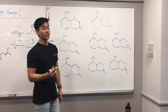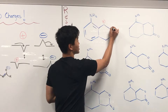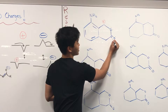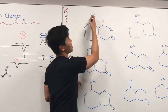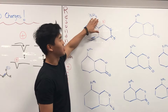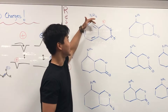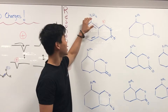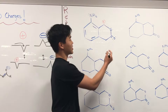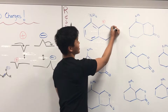The first thing I'm going to do is draw in the lone pairs — there are 2 on oxygen and then a pair on nitrogen. Like I said, this positive charge really wants these electrons. So the first thing we're going to do is fill it in with the lone pairs over here.